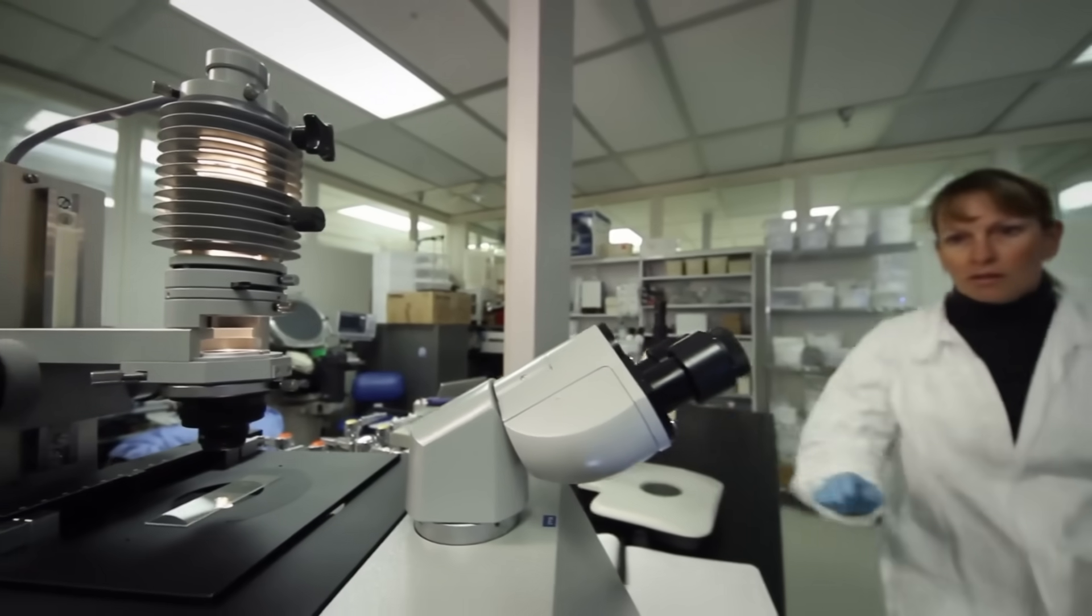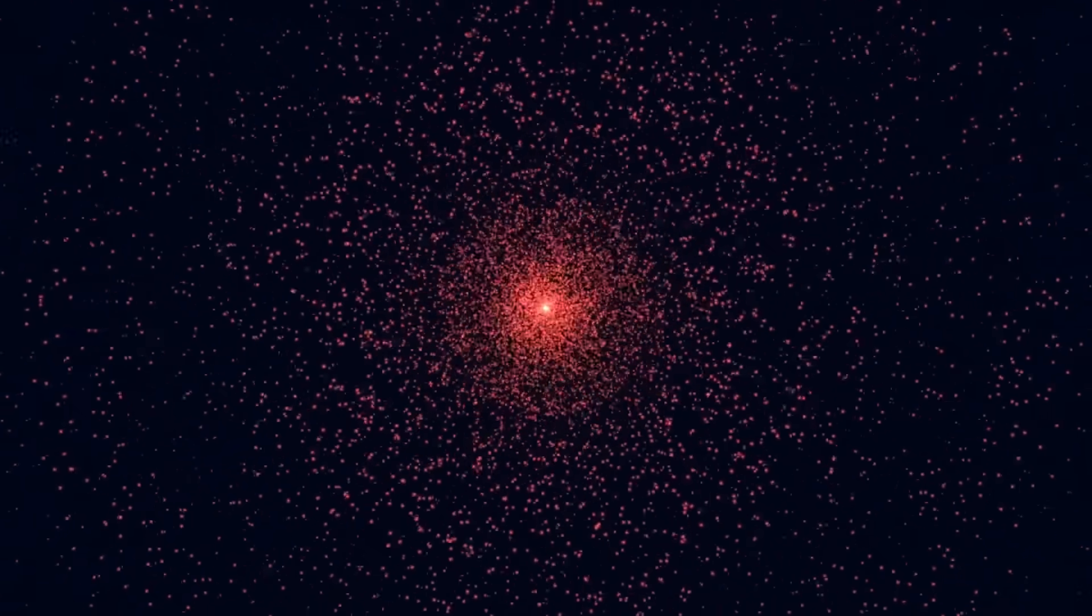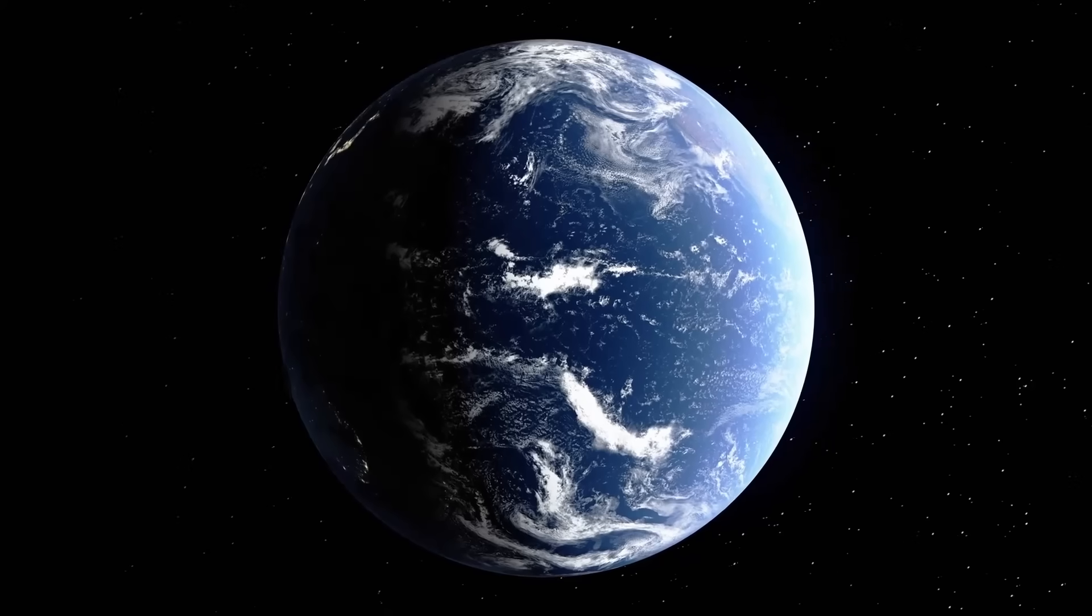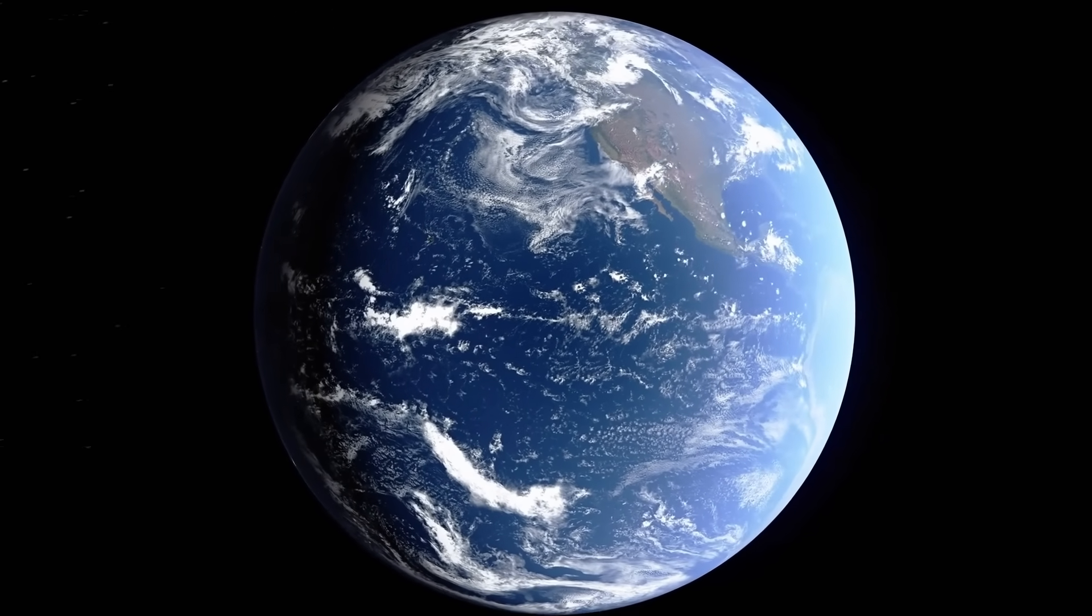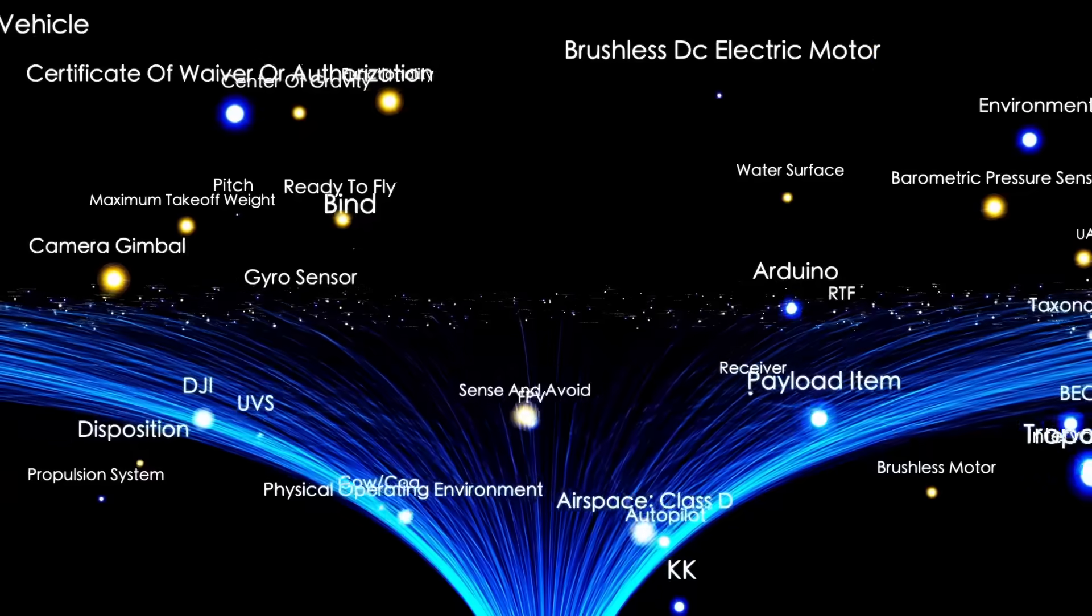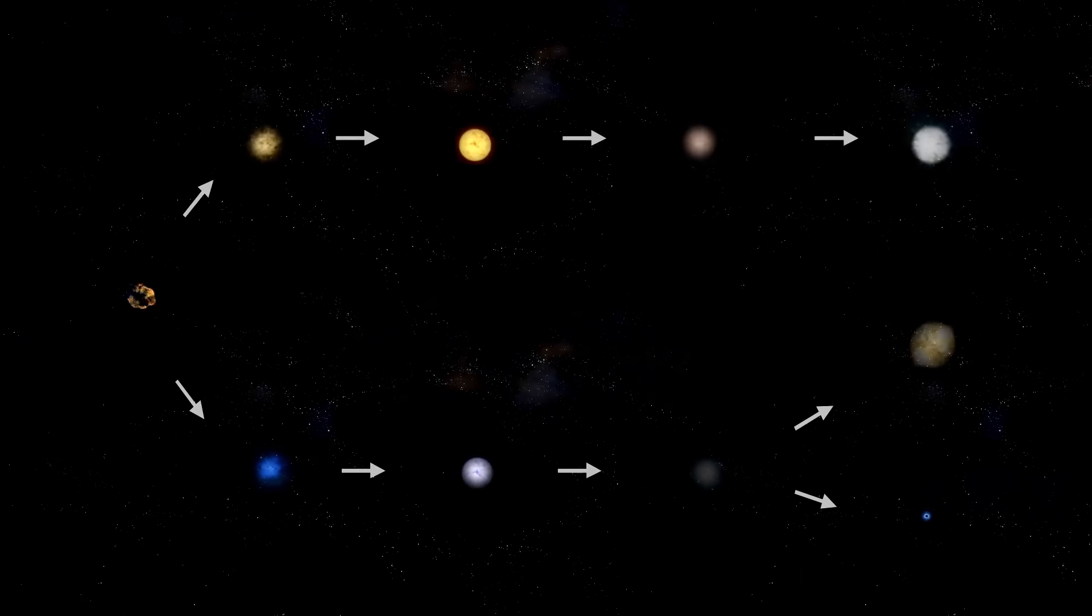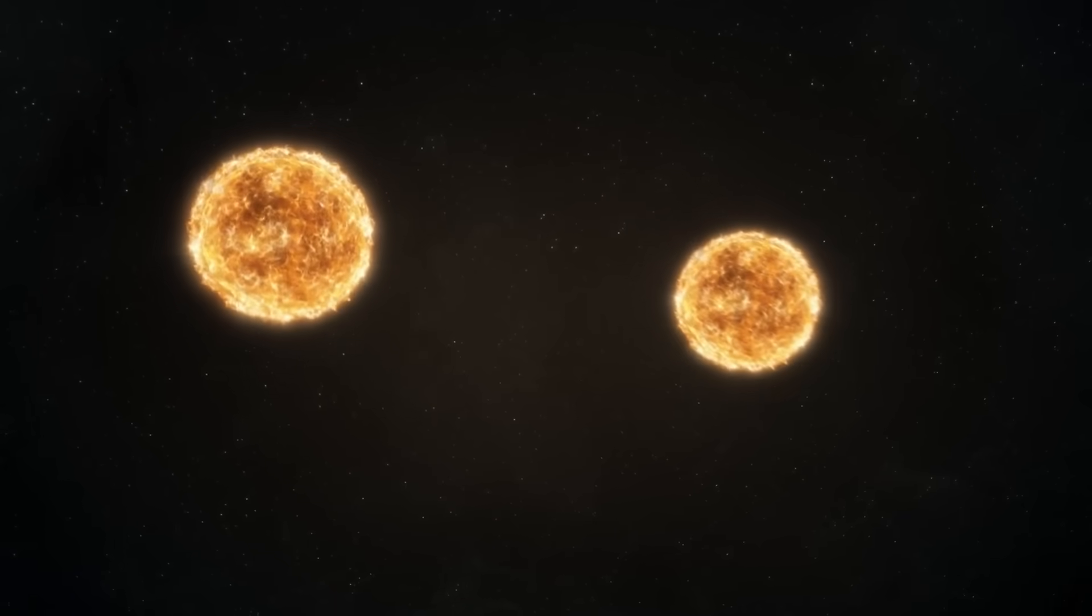For decades, comets have been predictable in their beauty. As they near the sun, ice sublimates, gases vent, and the object blooms in light. A slow, graceful unfolding. But 3.I shredded that script. Instead of a smooth increase in brightness, its light output surged violently, sometimes within a single night. These weren't flickers, these were leaps, surges of magnitude so extreme that instruments once blind to it suddenly lit up with its glow. And then, without warning, it dimmed again, not over days but hours. Nothing in nature behaves like this.